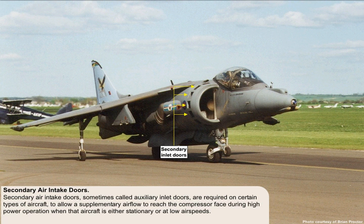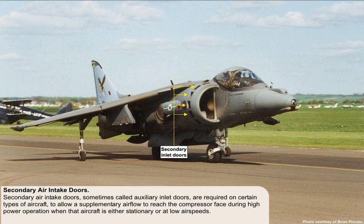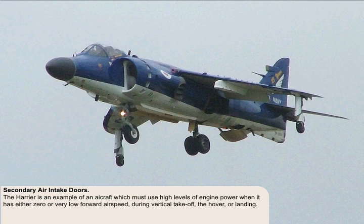Secondary air intake doors, sometimes called auxiliary inlet doors, are required on certain types of aircraft to allow supplementary airflow to reach the compressor face during high power operation when that aircraft is either stationary or at low air speeds. The Harrier is an example of an aircraft which must use high levels of engine power when it has either zero or very low forward airspeed during vertical take-off, the hover, or landing.